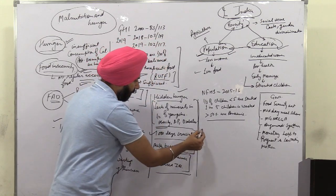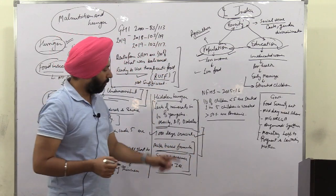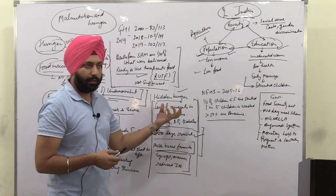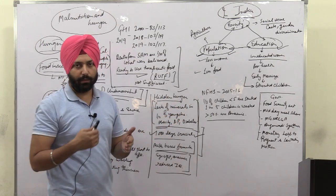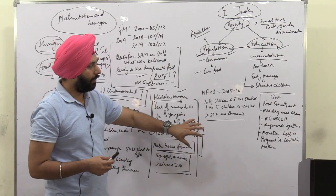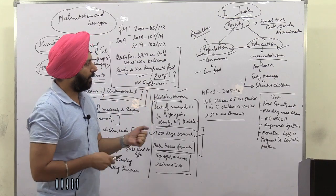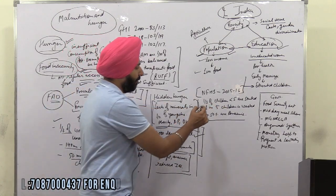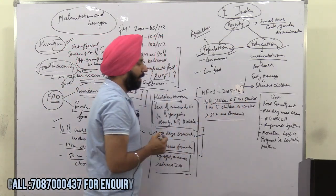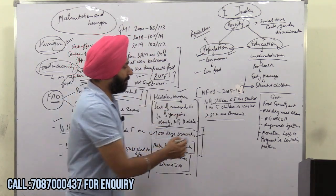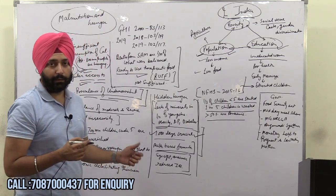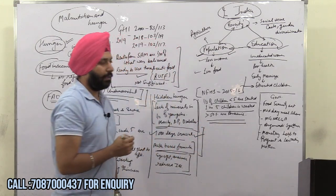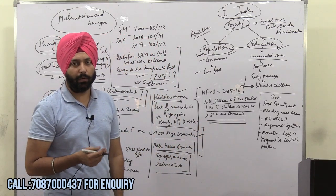Even overweight women can have children with stunted growth due to hidden hunger — deficiency of essential minerals and vitamins. A healthy diet is therefore very important. According to the National Family Health Survey 2015-16, one third of children below five years are stunted in India, one in every five children suffers from chronic debilitating thinness, and more than 50% of youngsters are anemic, lacking adequate iron in their blood.